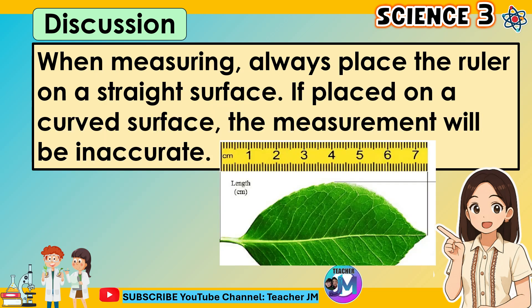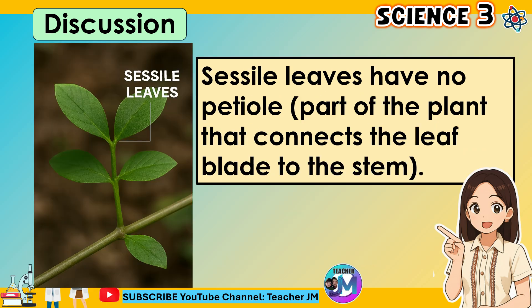When measuring, always place the ruler on a straight surface. If placed on a curved surface, the measurement will be inaccurate. Sessile leaves have no petiole — the part of the plant that connects the leaf blade to the stem.